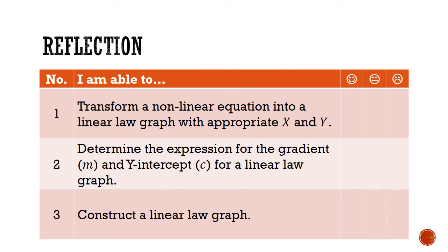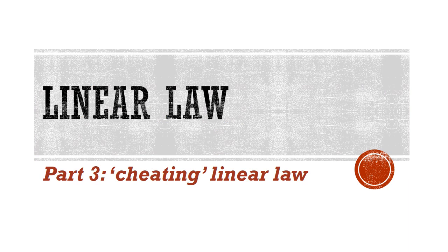Finally, let's go back to our success criteria set at the start of the lesson. Are you now able to transform a non-linear equation into a linear law graph with appropriate functions for big X and big Y? Are you able to determine expressions for the gradient m and big Y intercept c? And are you able to construct a linear law graph and use it to determine unknown constants? We have come to the end of part 2 of the linear law series. Stay tuned for the last and final installment, part 3, where we will go into how to cheat in linear law. Thank you for your kind attention and have a great day of learning.